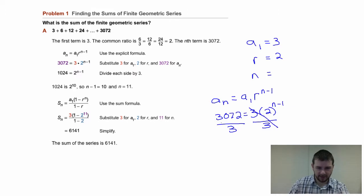3,072 divided by 3: 3 goes into 3,000 1,000 times, it goes into 72, 24 times. Let me double check my work, matches up, equals 2 to the n minus 1 power.